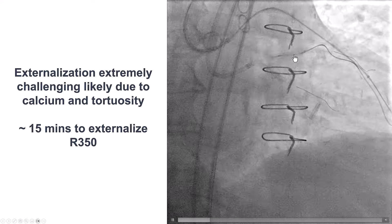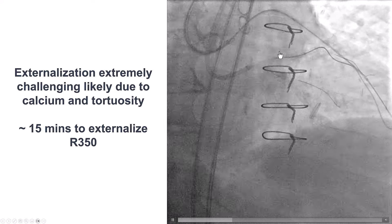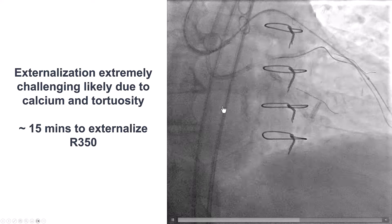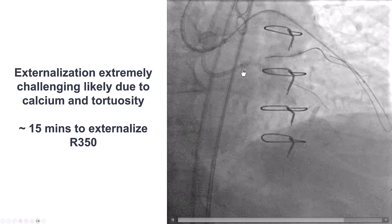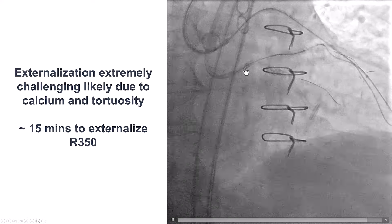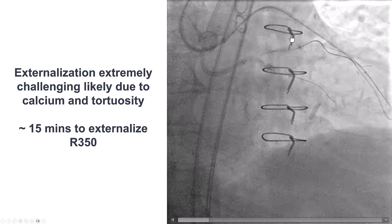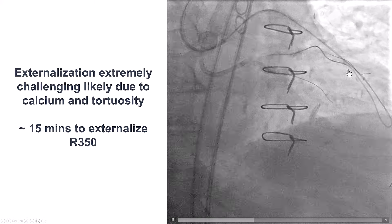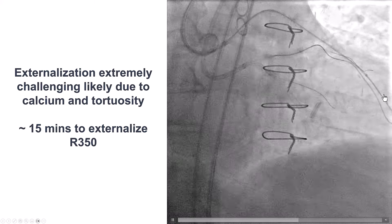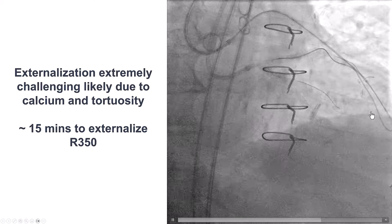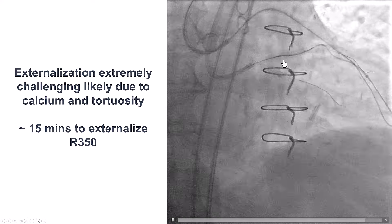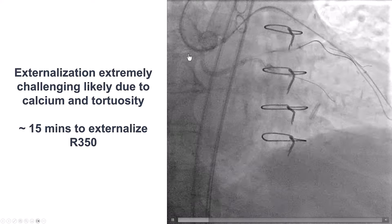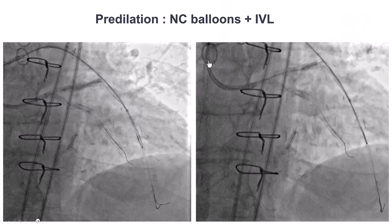Even though this was successful, we had a lot of difficulty advancing an R350 guidewire until externalization, likely because of significant tortuosity. We had to navigate a 180-degree bend and calcium within the occlusion. But eventually, we were able to externalize the R350.